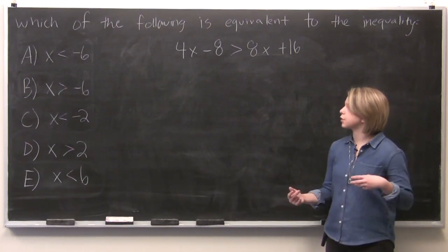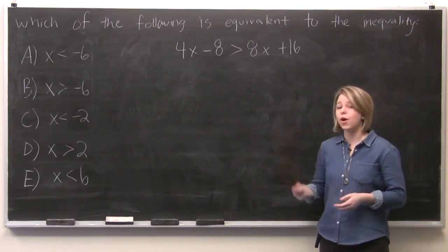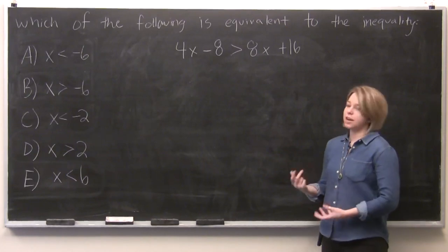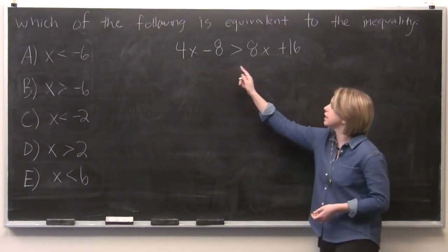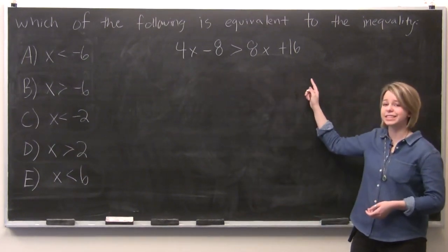To solve this we are going to first treat our inequality like it's an algebra problem. We are going to first simplify. So we've got 4x minus 8 is greater than 8x plus 16.